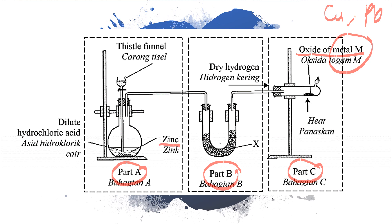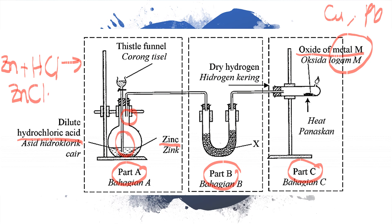You can use zinc and hydrochloric acid — a metal and an acid. Note the position of the thistle funnel and delivery tube. When zinc reacts with hydrochloric acid, it will produce zinc chloride, which remains in the flask, and produce hydrogen gas that flows through the delivery tube.